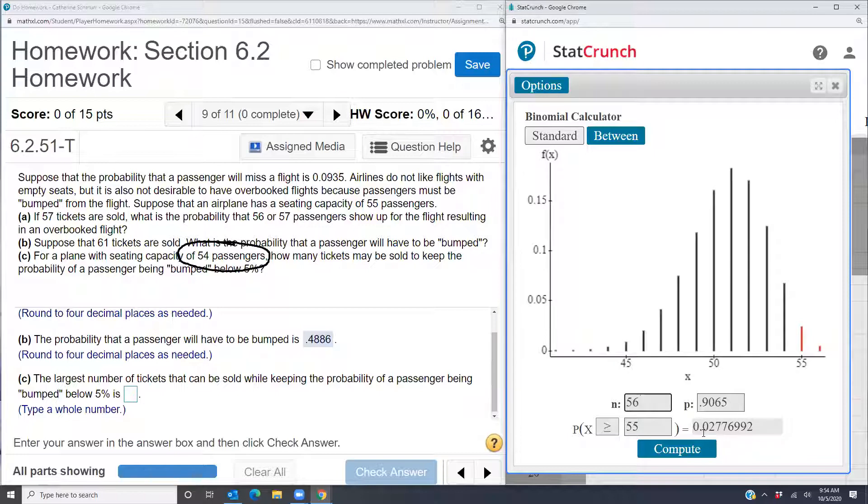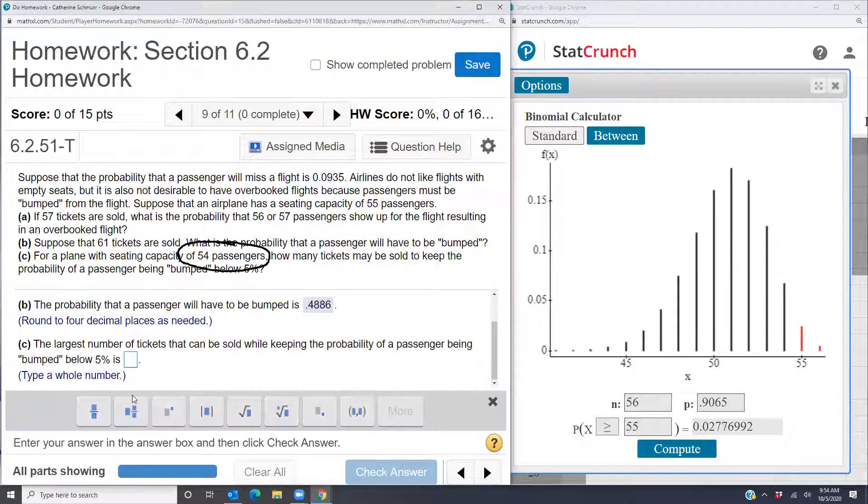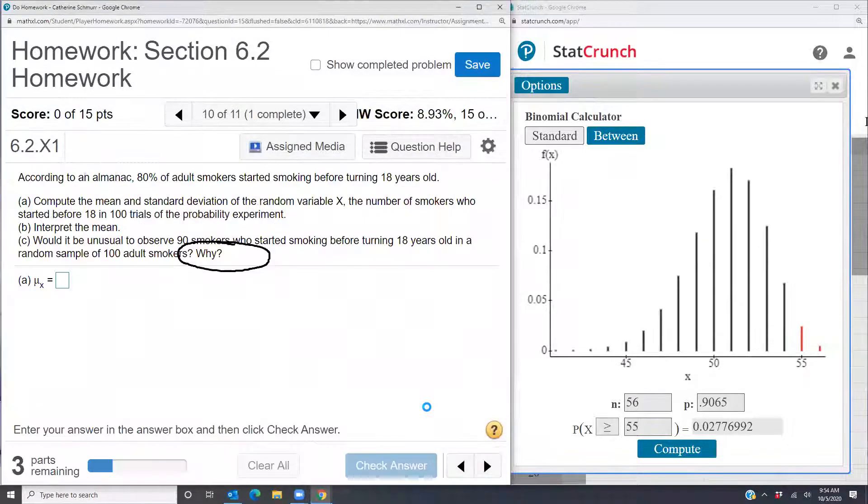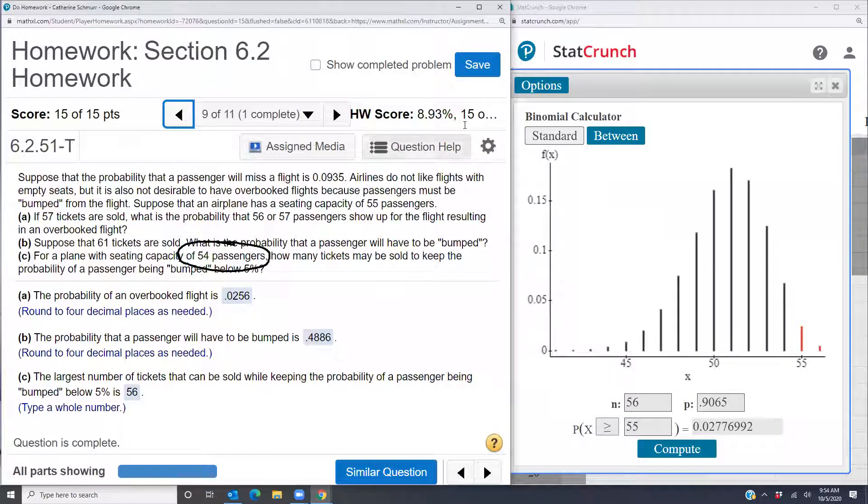So I want to change back to 56 tickets sold. And that gives me a probability that someone will have to be bumped of 0.0277, which is 2.77 percent. So this should be 56 tickets is the largest number that can be sold while keeping the percentage or probability of passengers needing to be bumped below five percent.